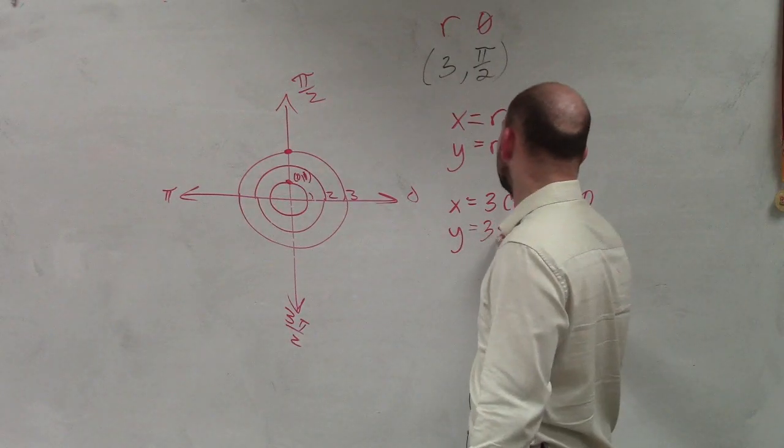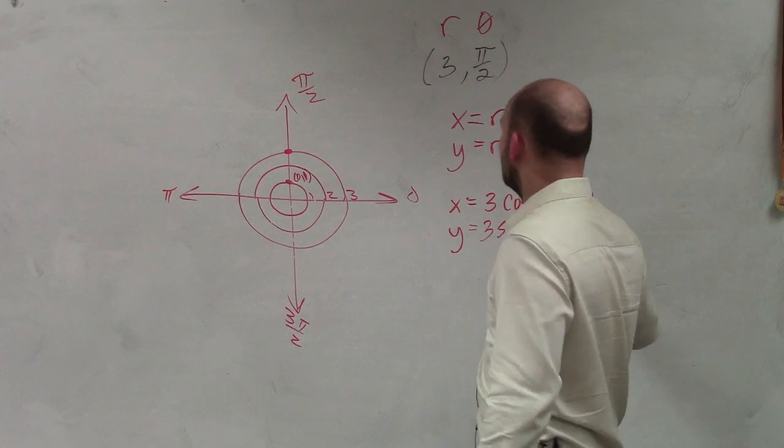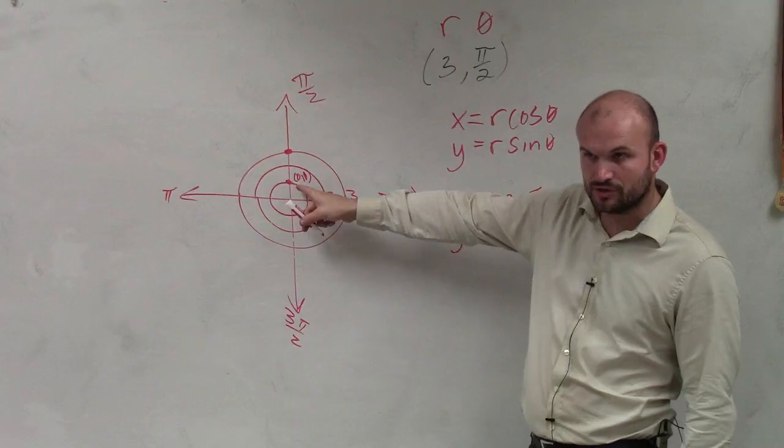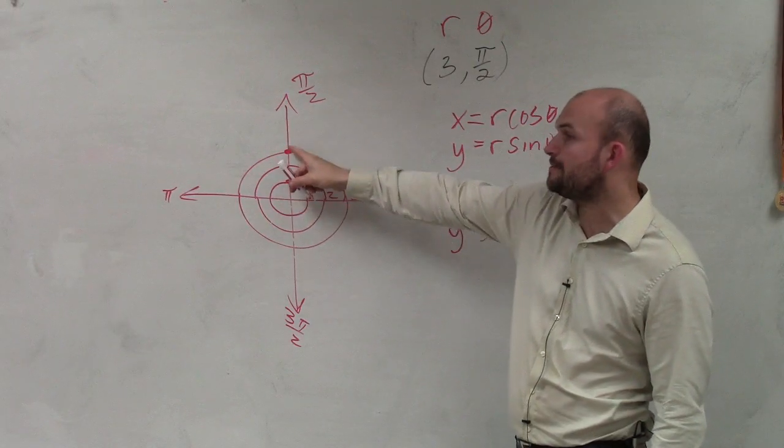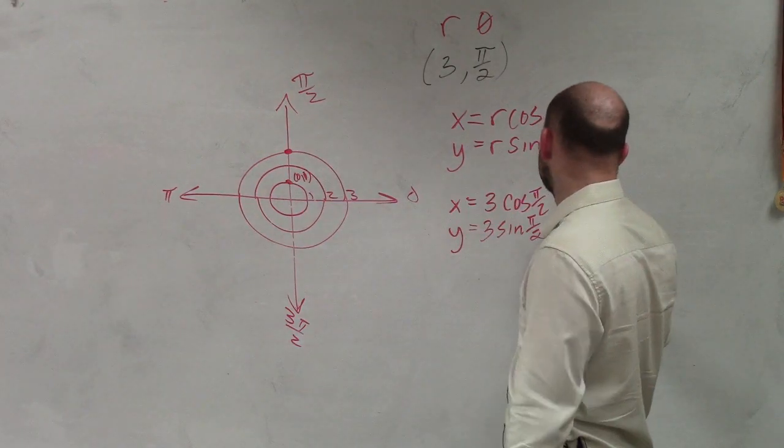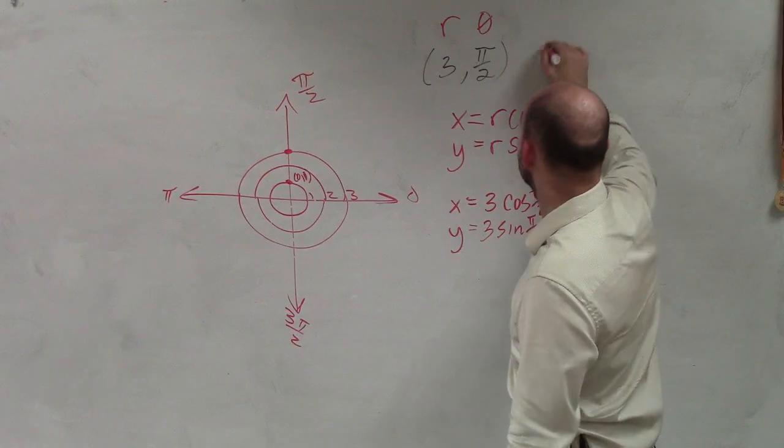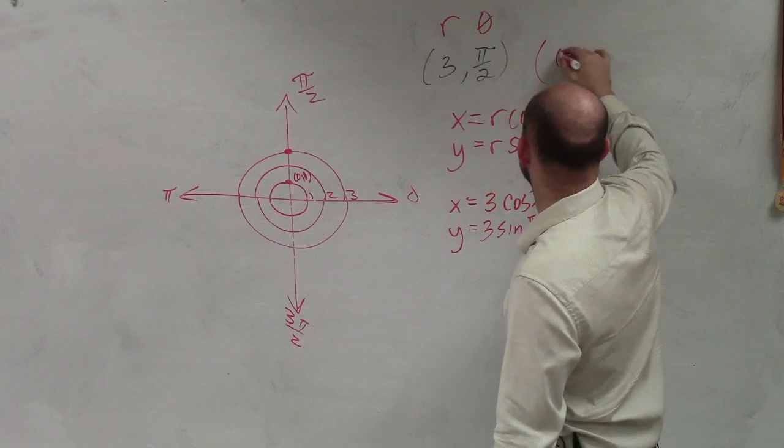However, when I do 3 times sine of pi halves, the sine of pi halves, which is for the unit circle, is 1. You just multiply it by your radius, which brings it up to 3. So therefore, my x and y-coordinate is going to be 0, 3.